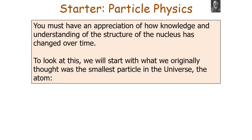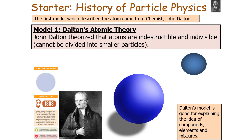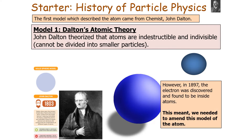You must have an appreciation of how the knowledge and understanding of the structure of the nucleus has changed over time. We start at what we originally thought was the smallest particle in the universe: the atom. The first model of the atom came from the chemist John Dalton, whose atomic theory was that atoms are indestructible and indivisible — they can't be divided into any smaller particles. Dalton's model was good for explaining the ideas of compounds, elements, and mixtures.